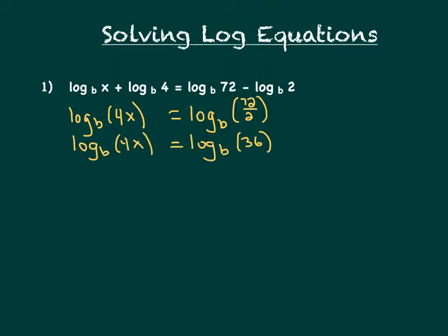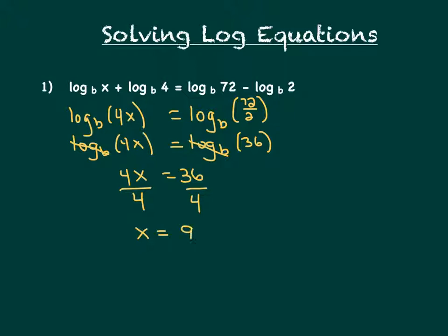Now since we have one single log term on the left-hand side and one single log term on the right-hand side, and they both have the same base, you're really just allowed to ignore the log to the base b — cross it off if you want. What we're left with is 4x equals 36. To finish solving, just divide both sides by 4, so we wind up with x equals 9.